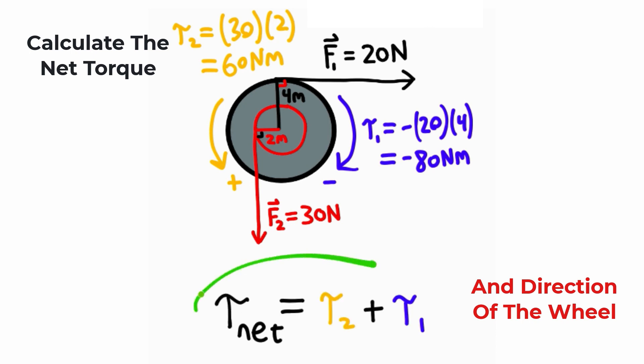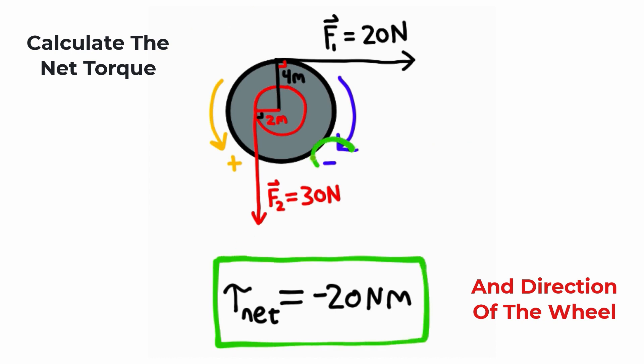To calculate the net torque on the entire system, I just need to add all of the torques together, and 60 plus negative 80 is going to be a net torque of negative 20 newton meters. So this is the net torque, and since our final answer was negative, the clockwise direction wins.